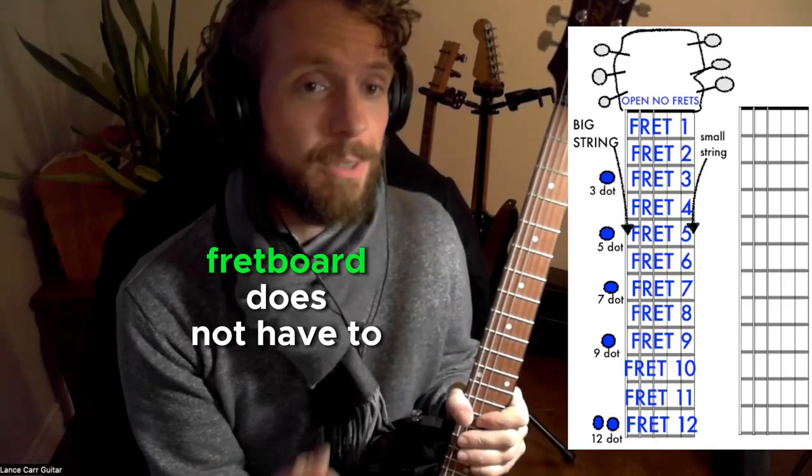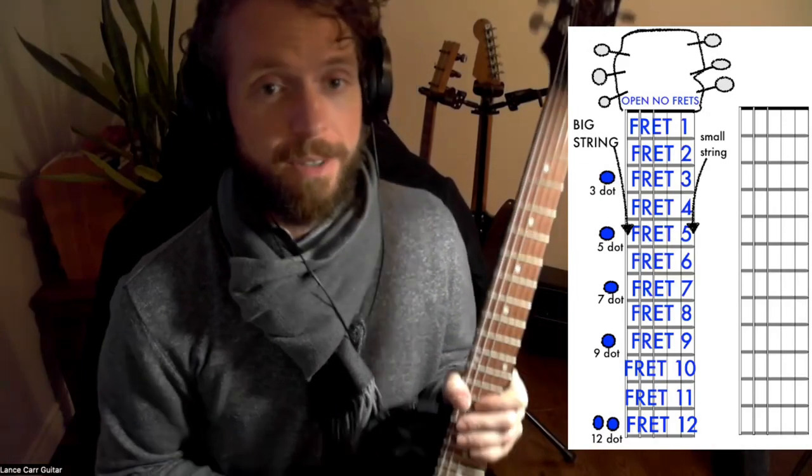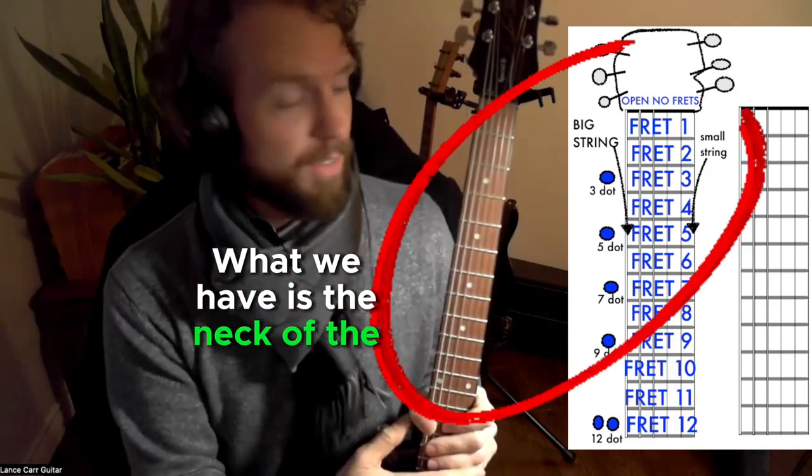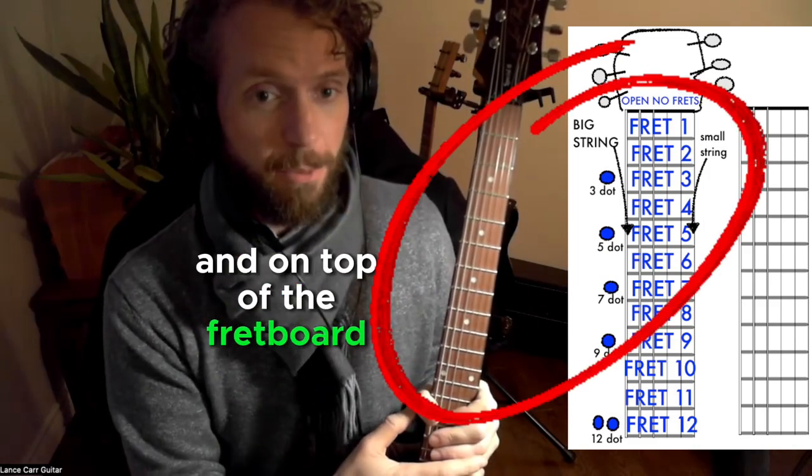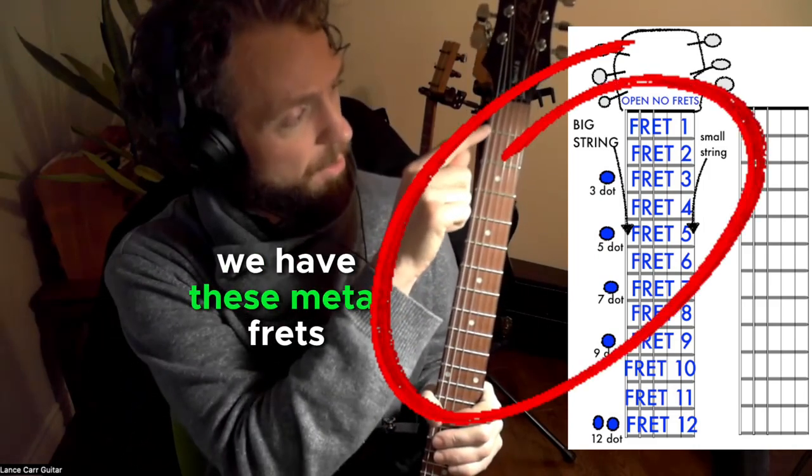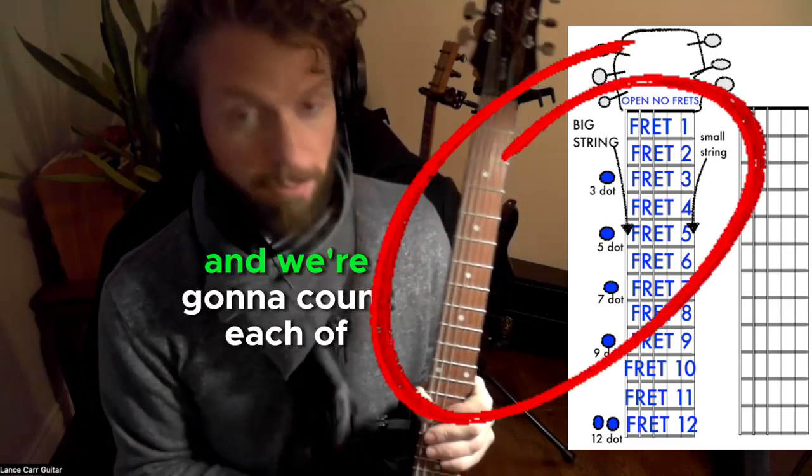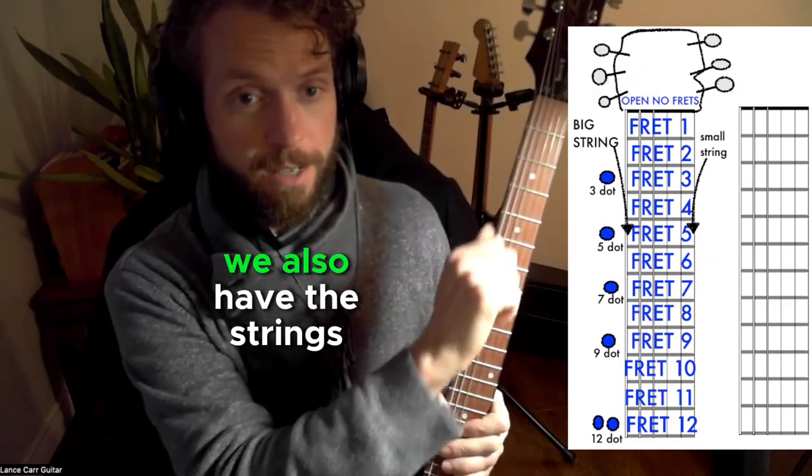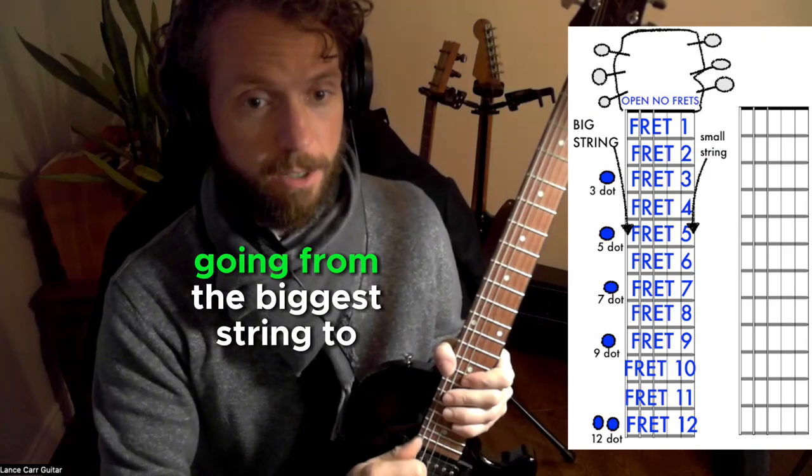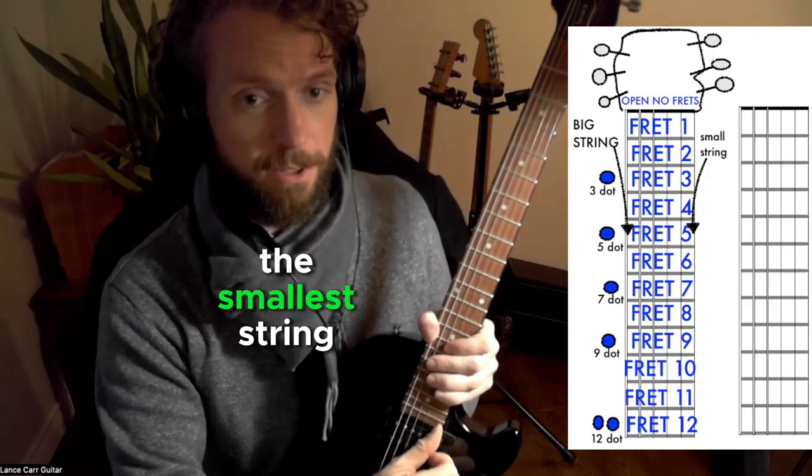For guitarists, reading a guitar fretboard doesn't have to be that complicated. What we have is the neck of the guitar, and on top of the fretboard, we have these metal frets, and we're going to count each of them. We also have the strings going from the biggest string to the smallest string.